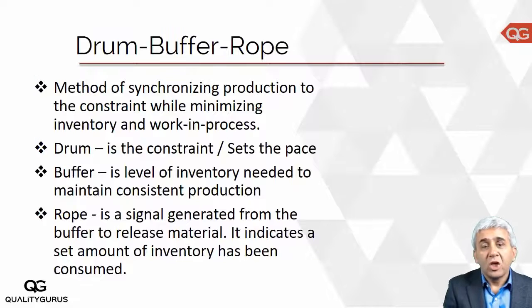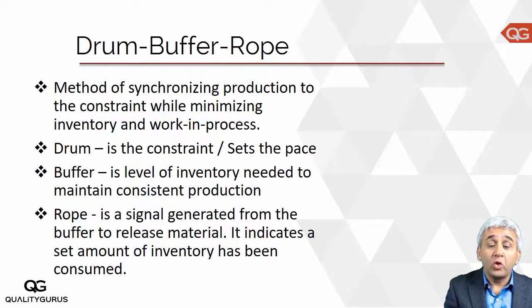After a very high level overview of throughput accounting, we are left with one more concept to cover in this topic of theory of constraints — and that is Drum Buffer Rope. Drum Buffer Rope is a method to synchronize production to minimize inventory and work in progress.